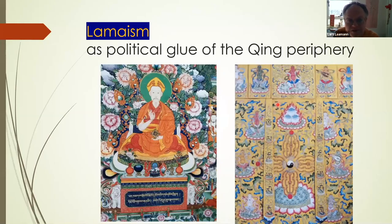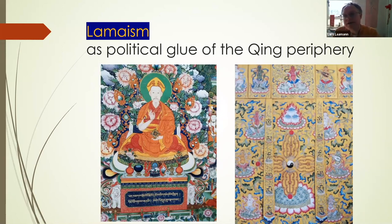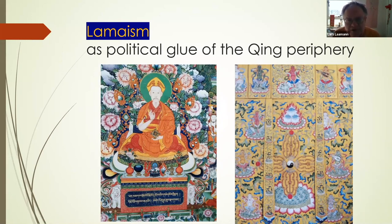Lamaism as the political glue of the Qing — yes, of course it's religious as well, but the Yongzheng Emperor was very much wedded to the idea that all populations be held together by certain religious practices. The most important one for the non-Chinese, scholar-official side — that would become Lamaism. That's Buddhism in the Tibetan tradition.